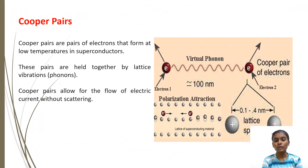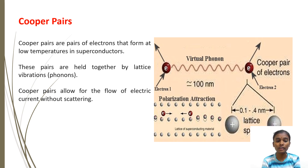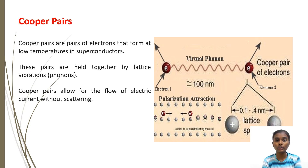Superconductivity is explained by the formation of Cooper pairs. Cooper pairs are pairs of electrons with opposite spins and momentum. These pairs are bound together by lattice vibrations known as phonons, and form at low temperatures in superconductors. Cooper pairs allow for the flow of electric current without scattering.